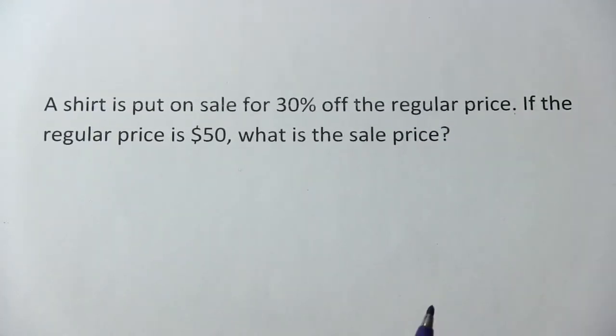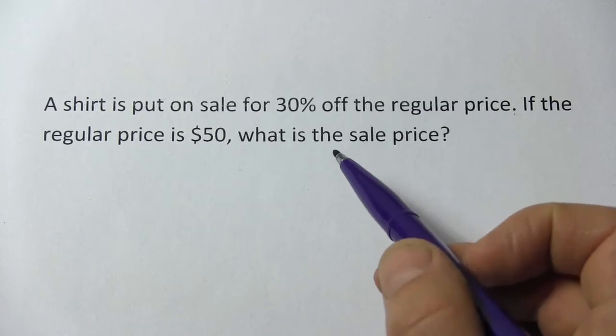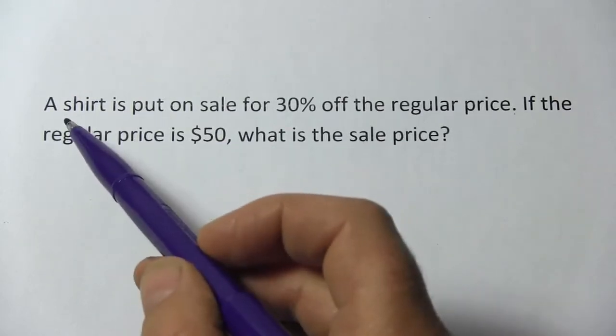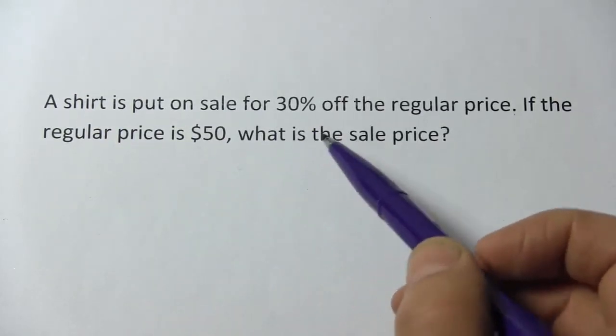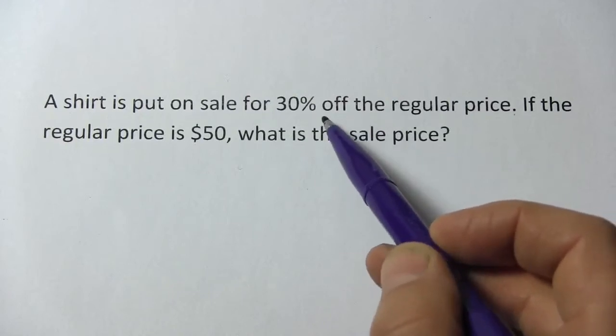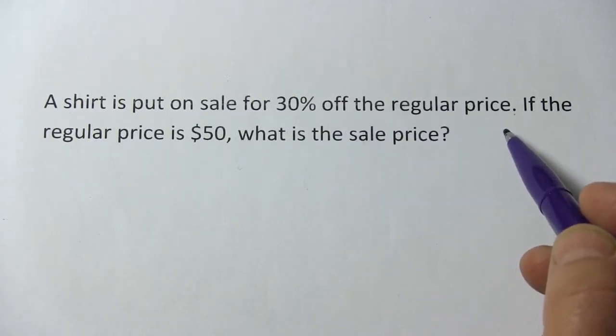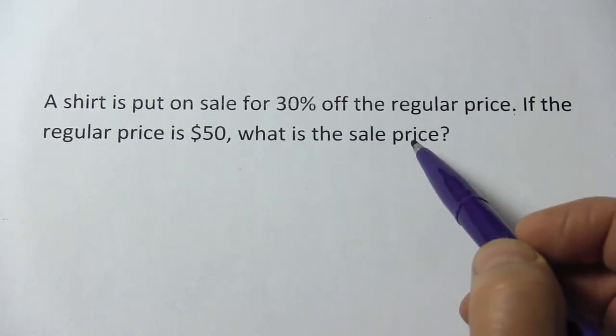Now this one looks almost the same, but the wording is just slightly different. It says a shirt is put on sale for 30% off, not of, off the regular price. If the regular price is 50, what's the sale price?